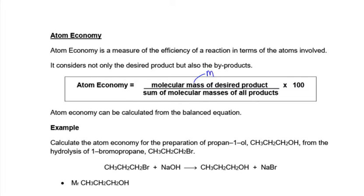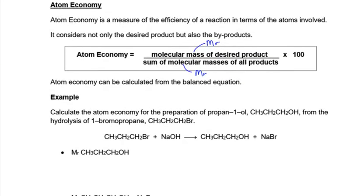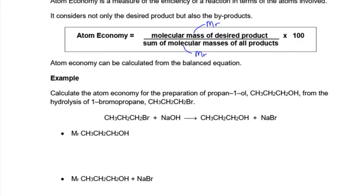We're going to add up the MR of the product that we want and divide by the MR of all of the products together and we're going to use that to calculate how many of the atoms end up in the useful product, how much waste we've got. It is all about the waste. So if you've got 50% atom economy you've got 50% waste. If you've got 70% atom economy you've got 30% waste. It's all about how much is wasted and how much goes into the product that you want.